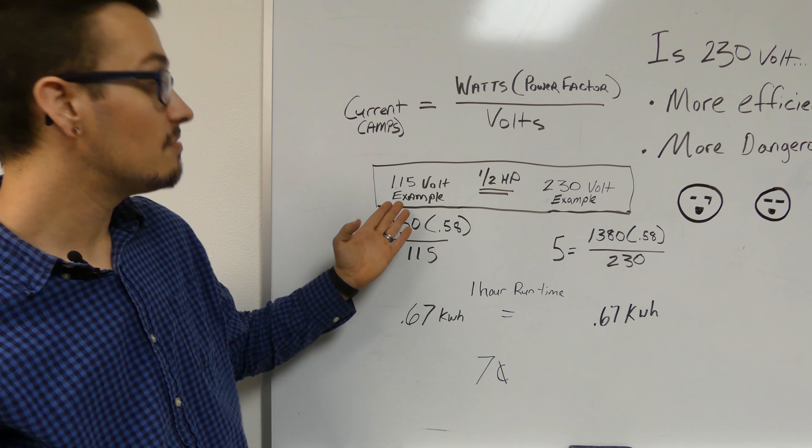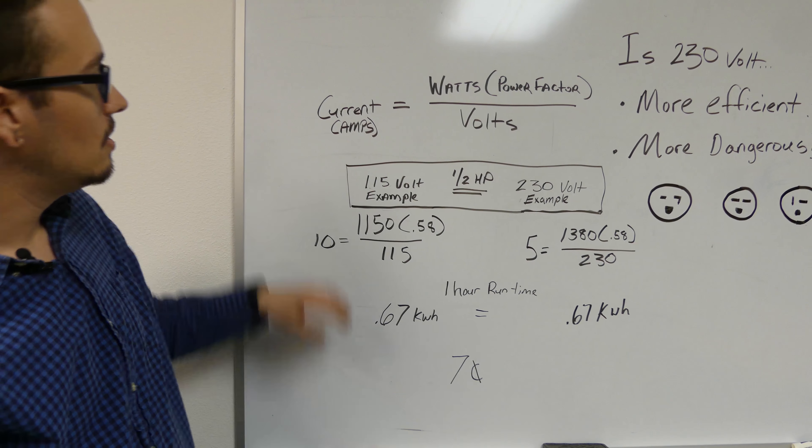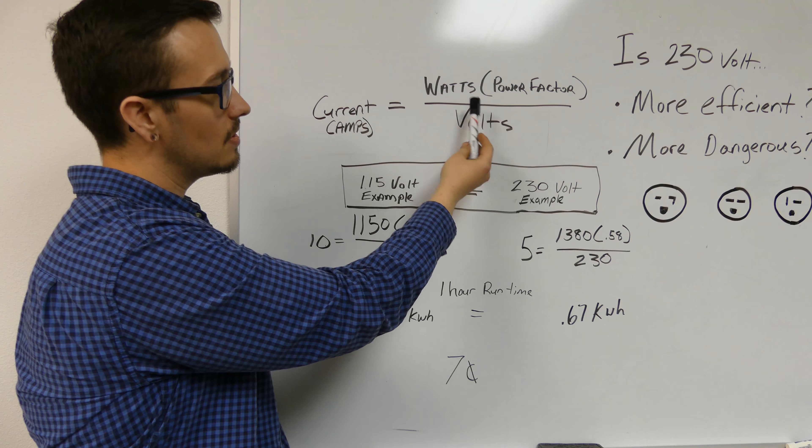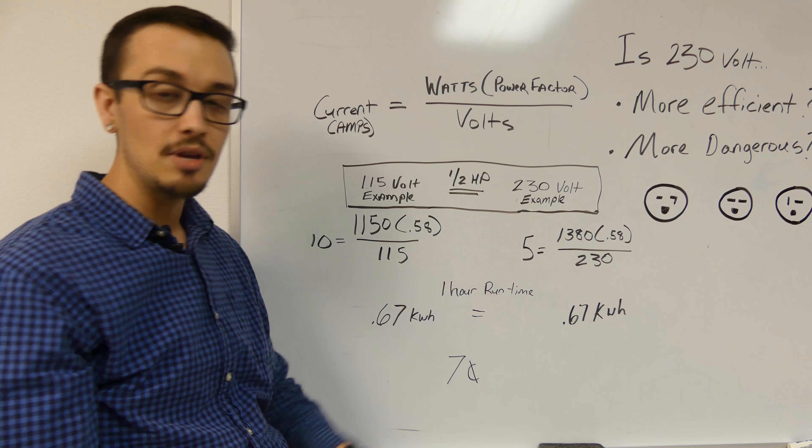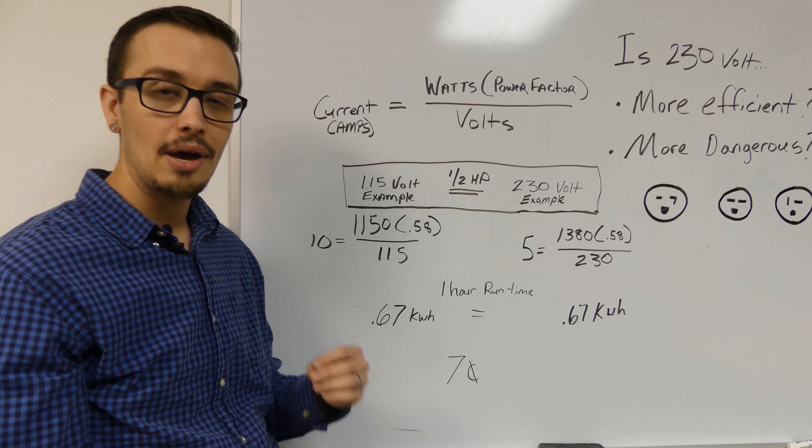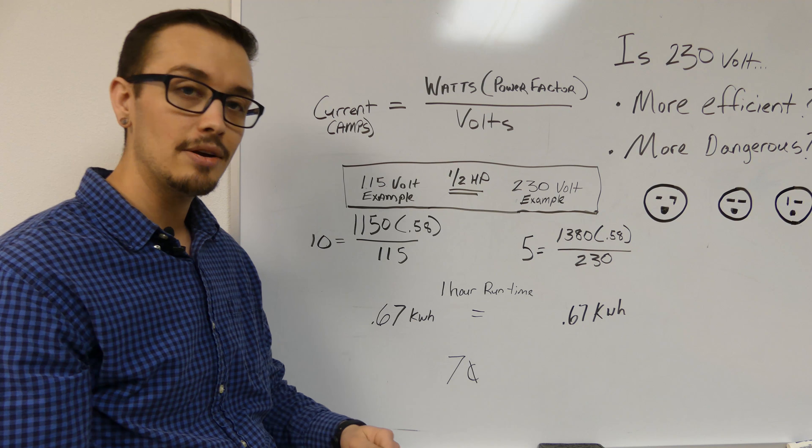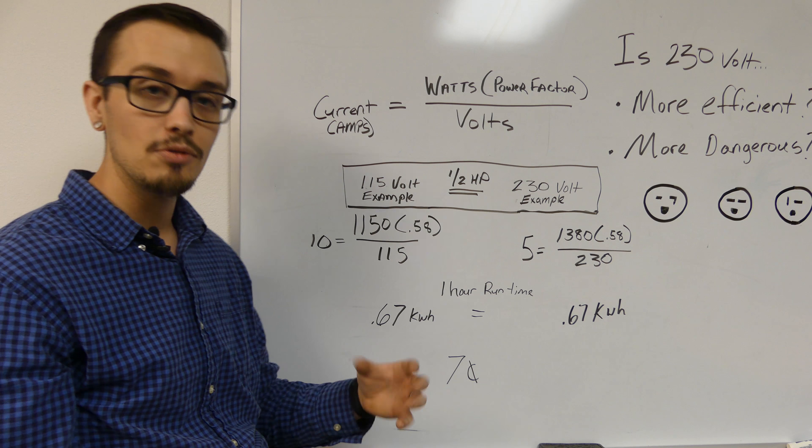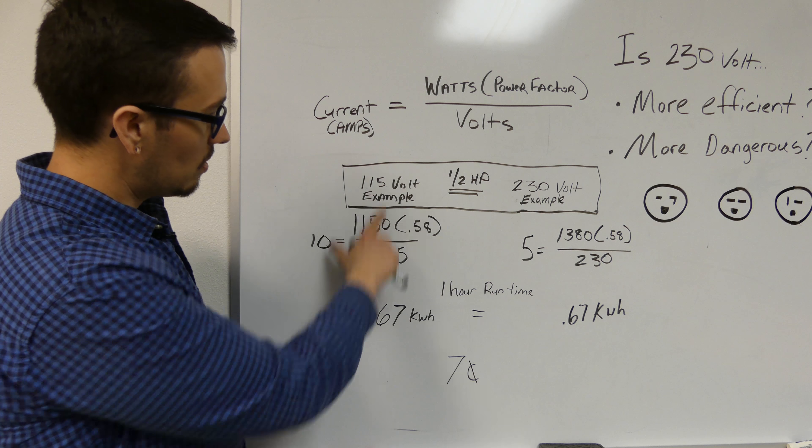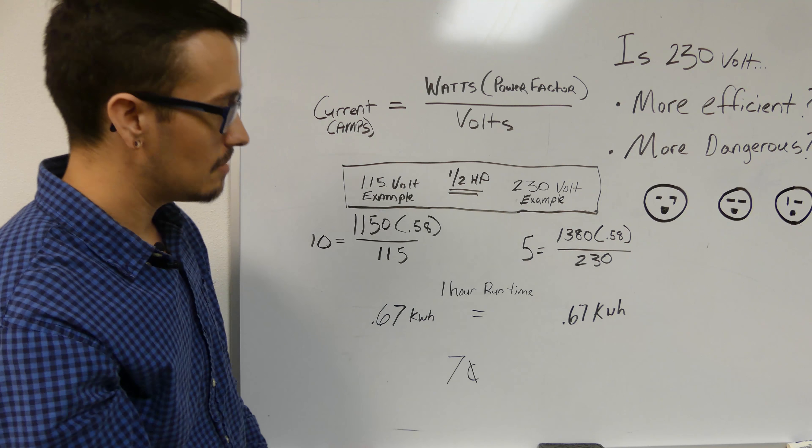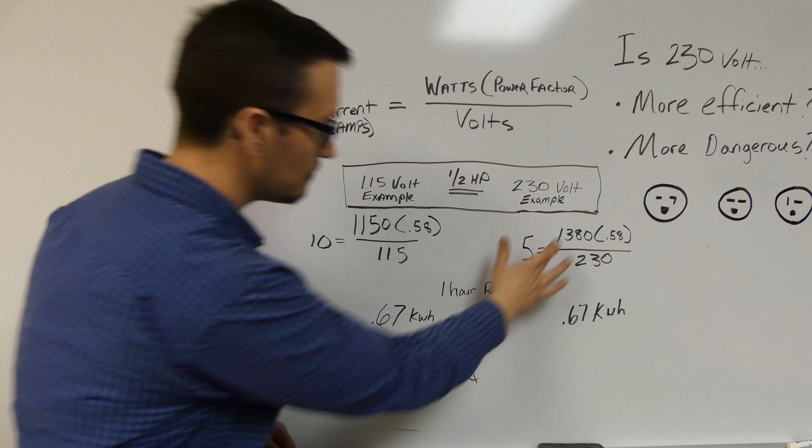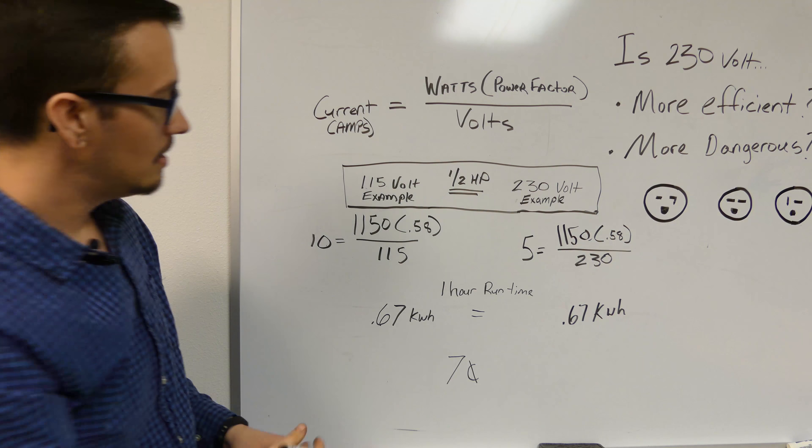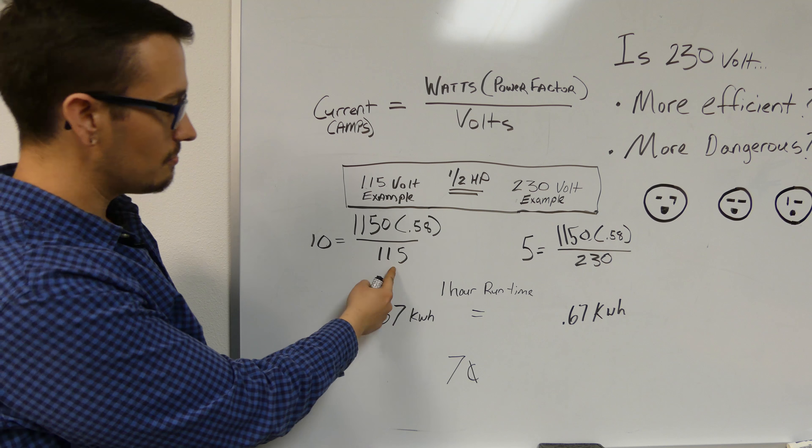They're taking the number of watts that you've got at any given time and multiplying that by the length of time that it's in use. They divide that by a thousand to get the kilowatt hours, and that's what you pay to the power company. We're going to show that relationship here on the 115 volt and 230 volt comparison. Here's the formula: current in amps equals watts multiplied by the motor's power factor.